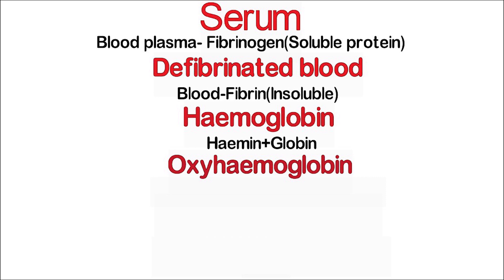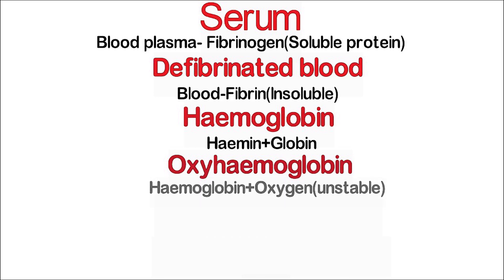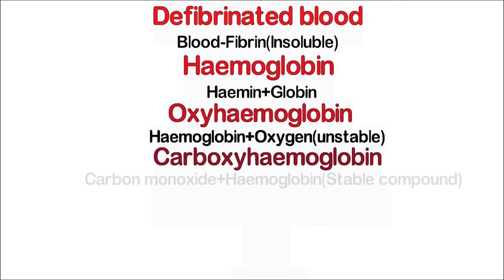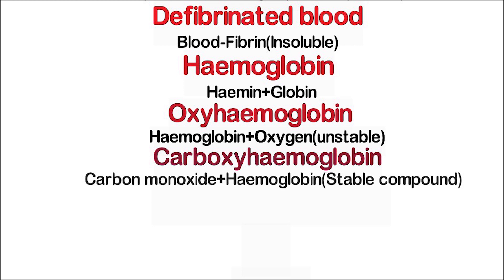Oxyhemoglobin is composed of hemoglobin and oxygen. It is an unstable compound, meaning hemoglobin can be dissociated from oxygen. Carboxyhemoglobin is composed of carbon monoxide and hemoglobin. It is a stable compound — once carbon monoxide is bound with hemoglobin, it cannot be separated.